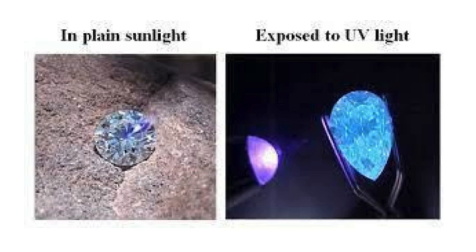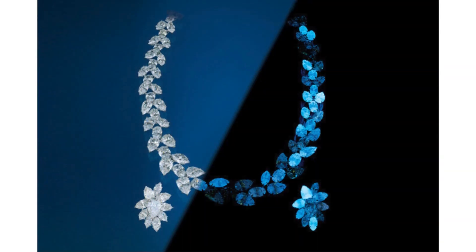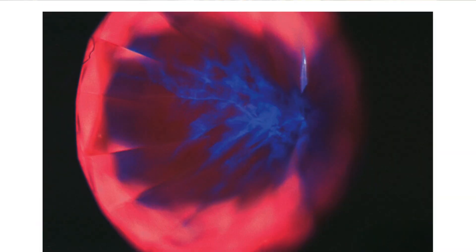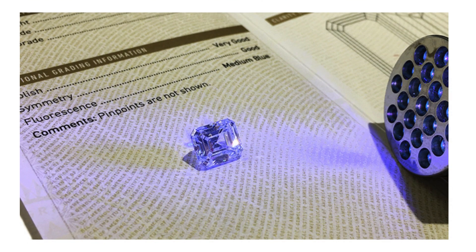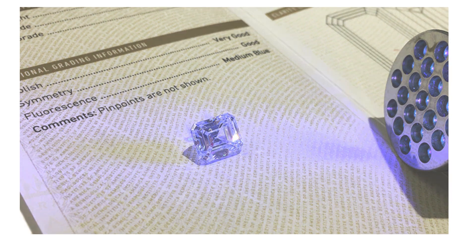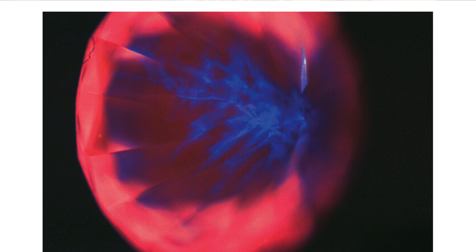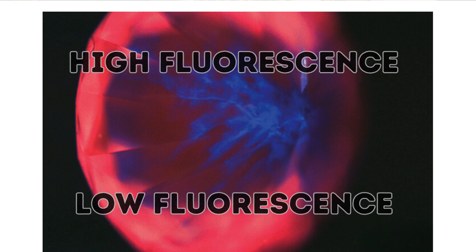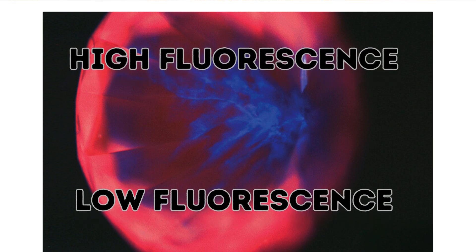Now that we have looked into how color grading of fancy colored diamonds happens, the next important topic is fluorescence. Fluorescence is the reaction of trace minerals within the diamond that cause the diamond to glow when exposed to ultraviolet light. Every diamond has trace minerals inside it, and when exposed to UV or blue light, those minerals create an inner glow, allowing us to see whether the stone has high, low, or no fluorescence at all.